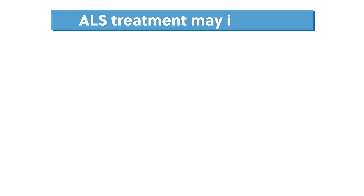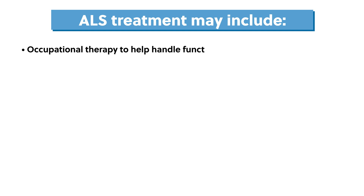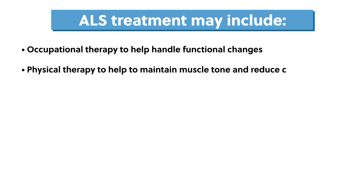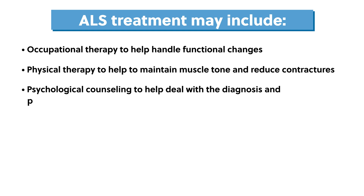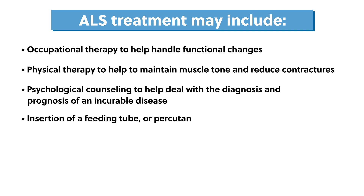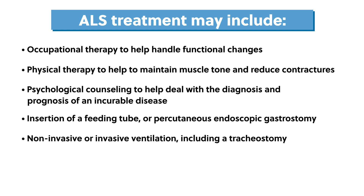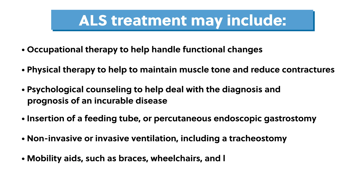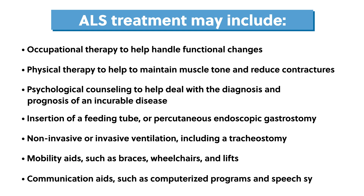Treatment for ALS is primarily supportive and may include occupational therapy to help handle functional changes, physical therapy to help maintain muscle tone and reduce contractures, psychological counseling to help deal with the diagnosis and prognosis, insertion of a feeding tube or percutaneous endoscopic gastrostomy, non-invasive or invasive ventilation including a tracheostomy, mobility aids such as braces, wheelchairs, and lifts, and communication aids such as computerized programs and speech synthesizers.